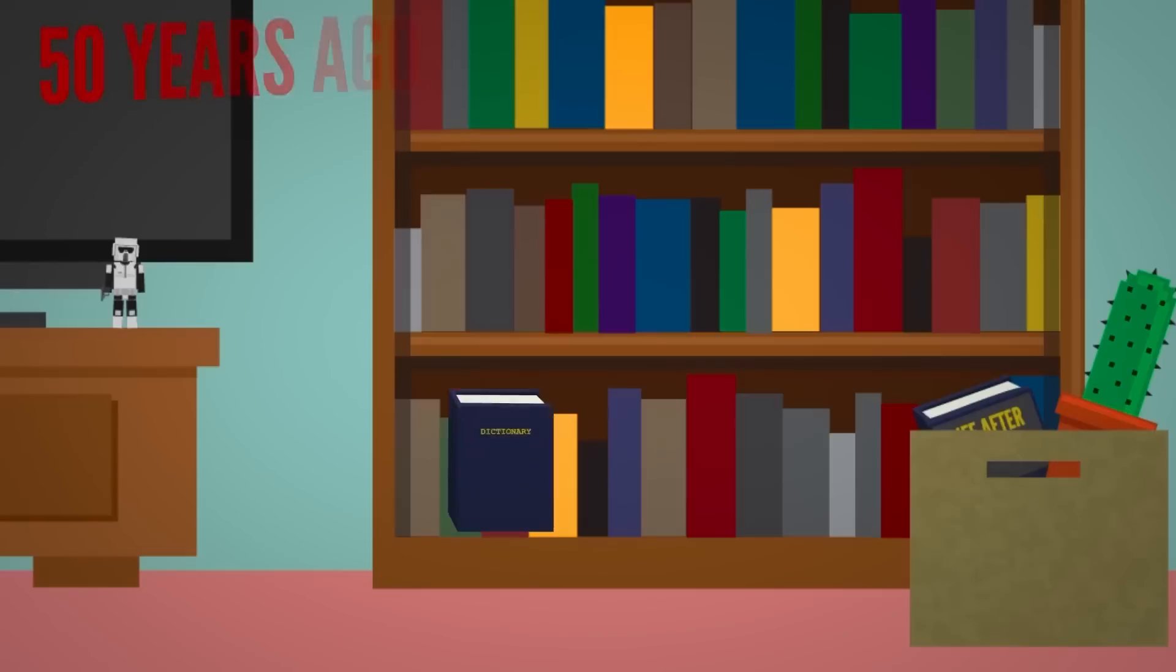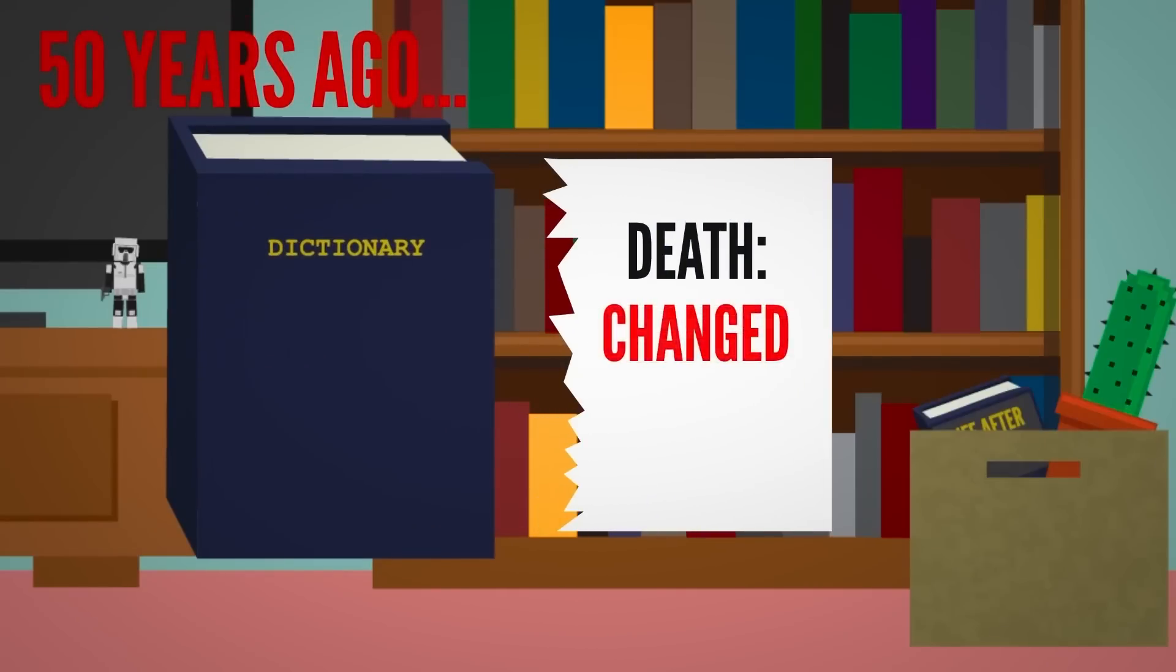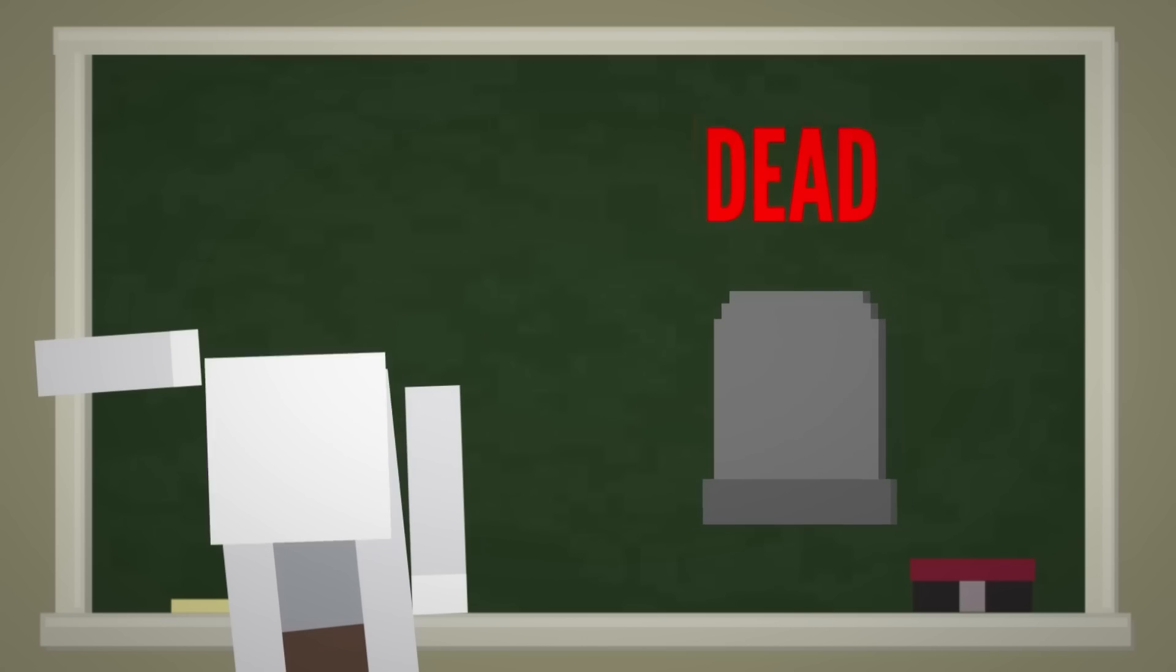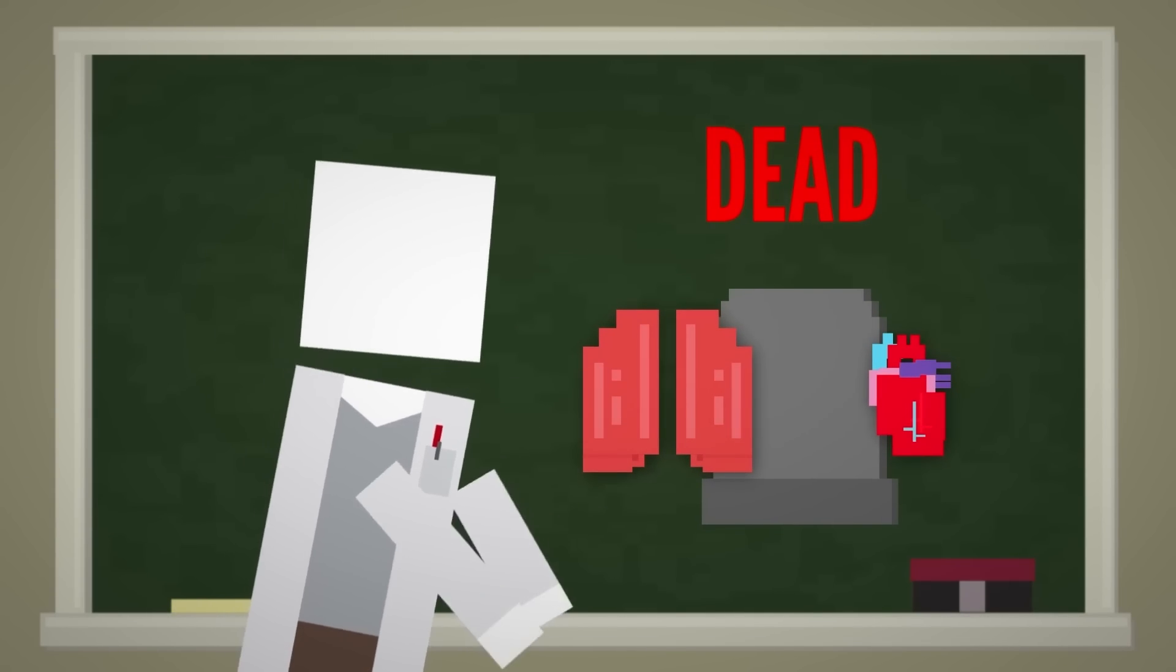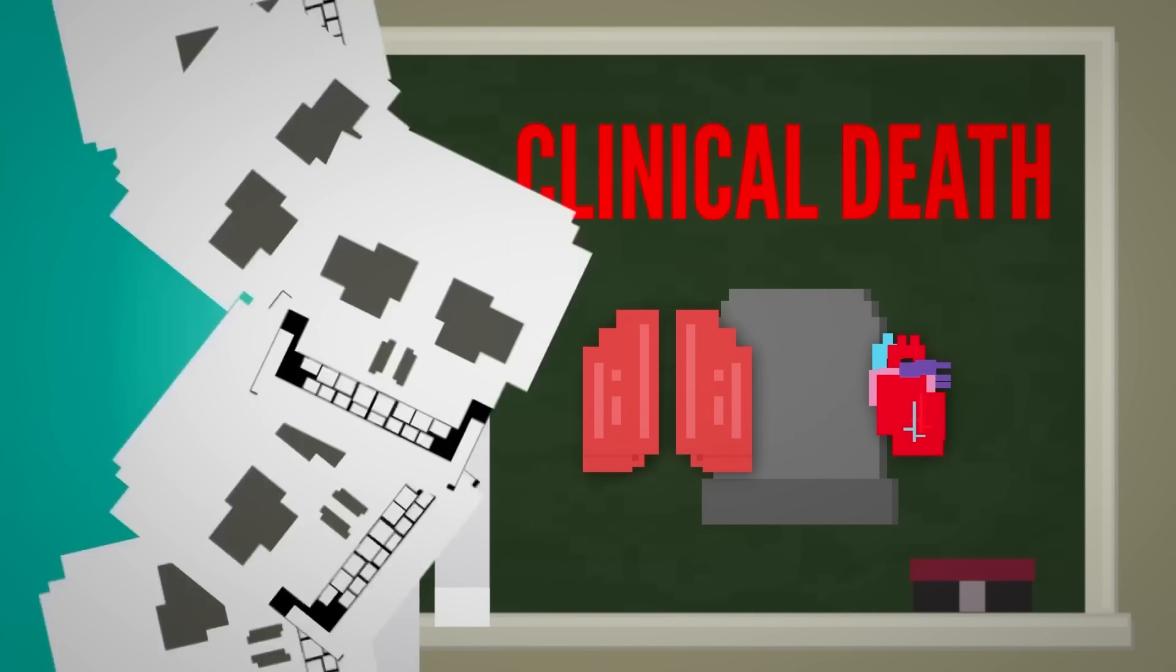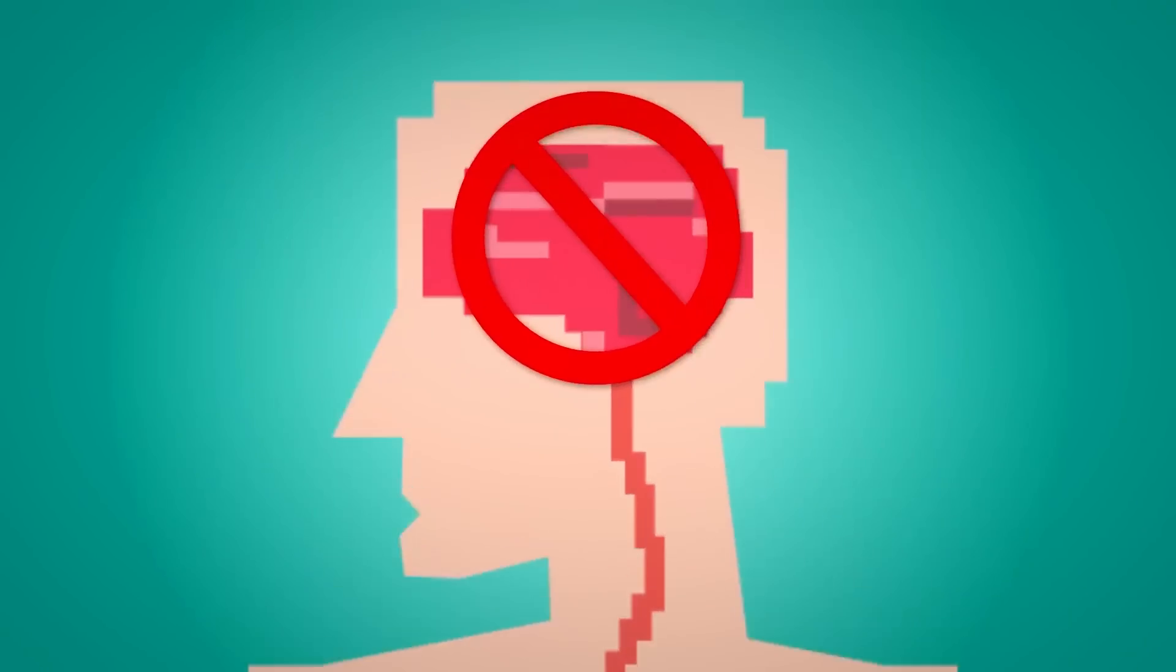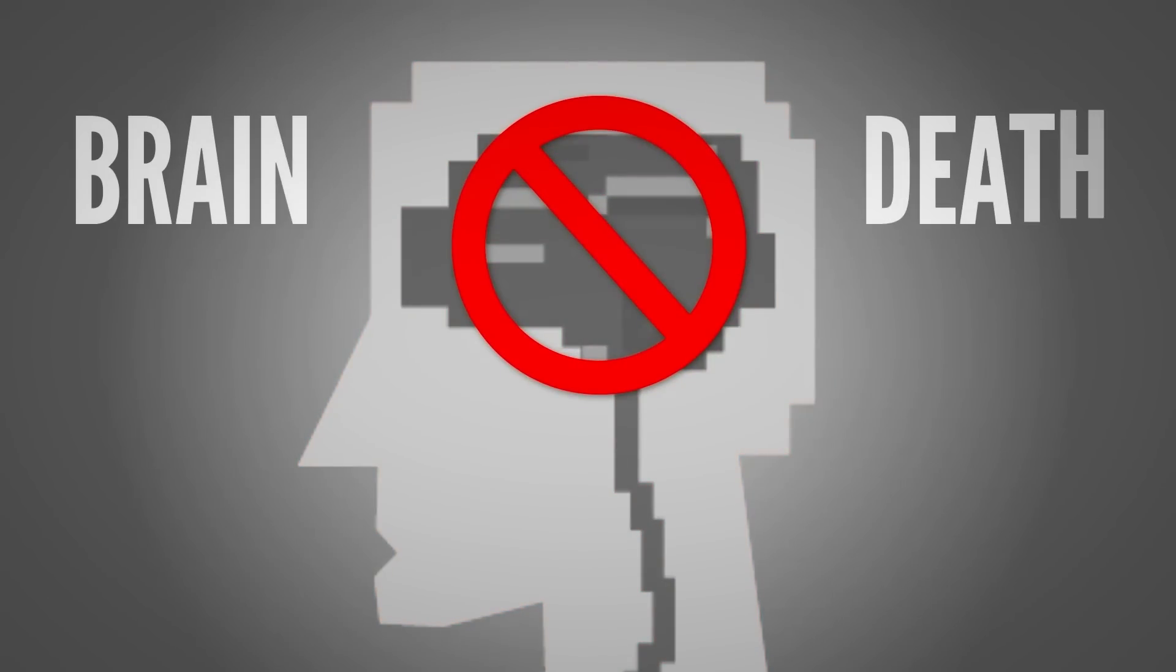About 50 years ago, the definition of death changed. Instead of declaring someone dead when their heart and lungs stopped, which is now referred to as clinical death, death is considered to occur when the brain stops working, known as brain death.